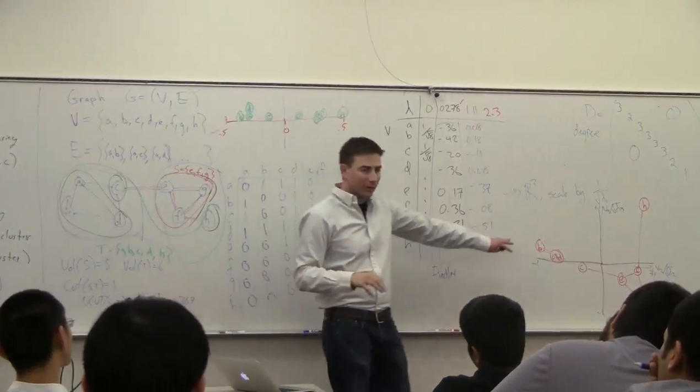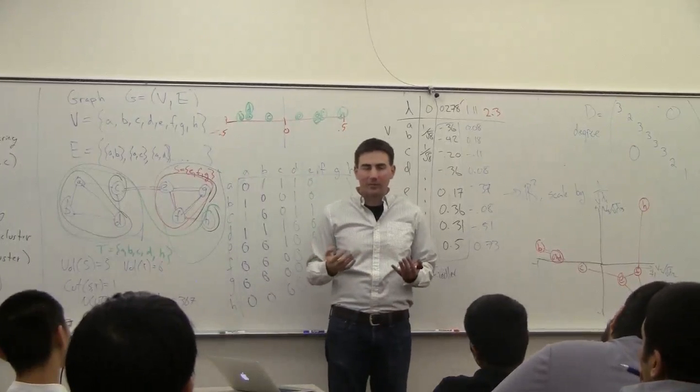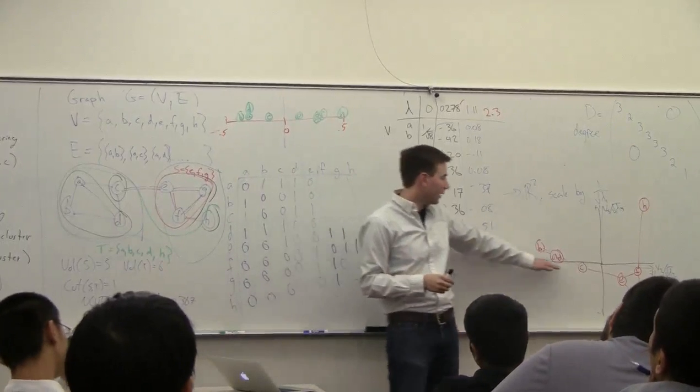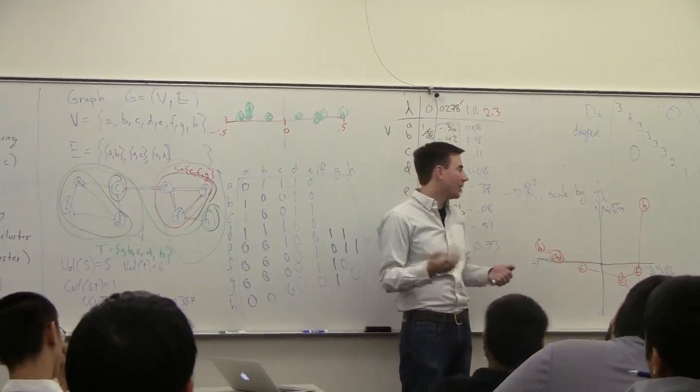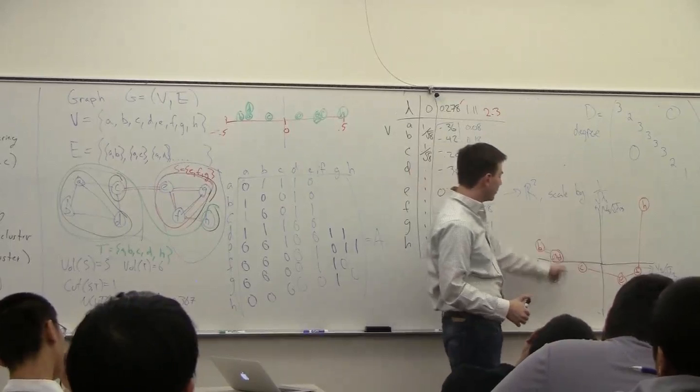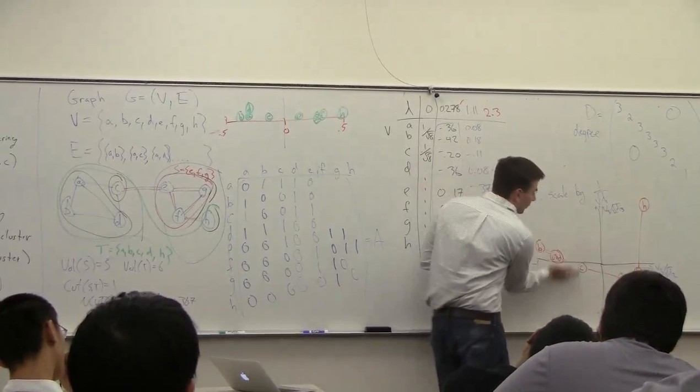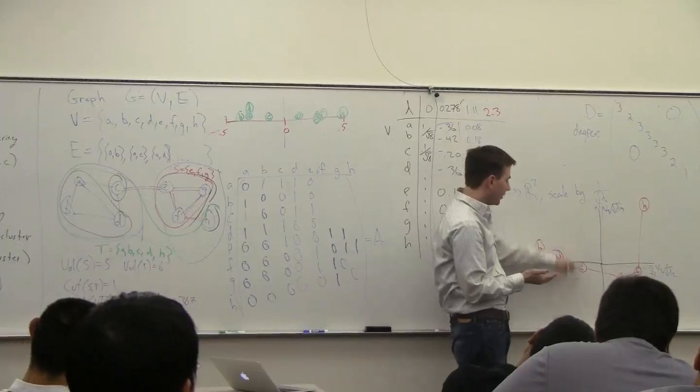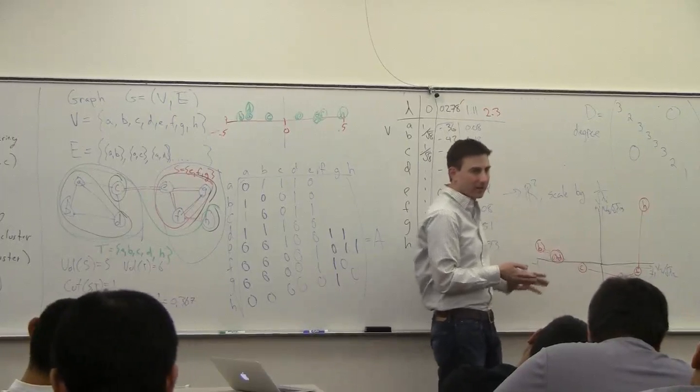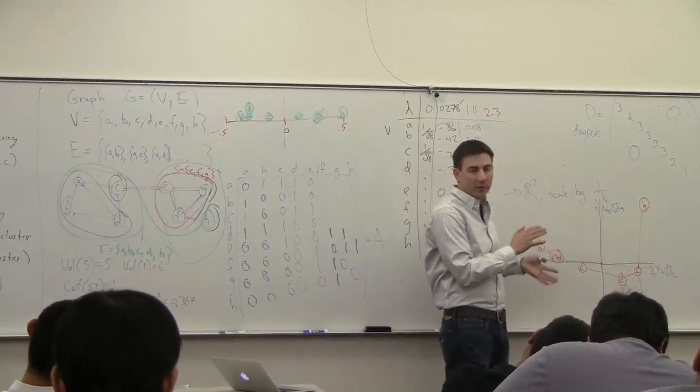Now, this is not always going to work. You're not always going to get the best cut just by looking at the positive and the negative values. You may want to sort these based on these values and then scan and take the best normalized cut value you can in this subset. But in many cases, it's a good first approximation.